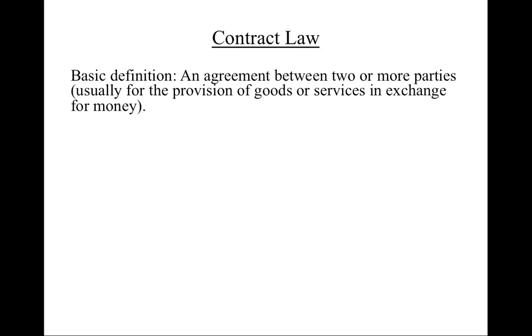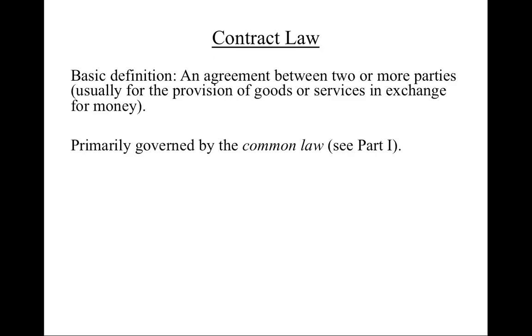We'll begin with contract law. Contract law is the law governing binding promises between people. A contract is an agreement between two or more parties, usually for provision of goods or services in exchange for money, though contracts are not limited in this way and can cover almost any conceivable topic and exchange. Contract law is governed by the common law, which was discussed in part one of this module series, meaning the rules about how a contract is formed and performed have mostly been created by judges over hundreds of years of dealing with contractual disputes.